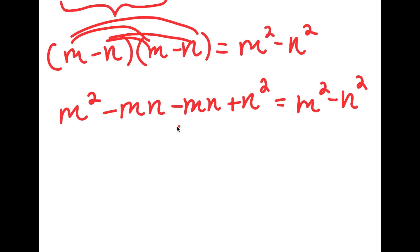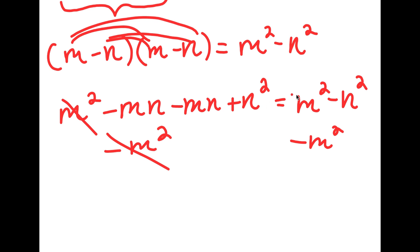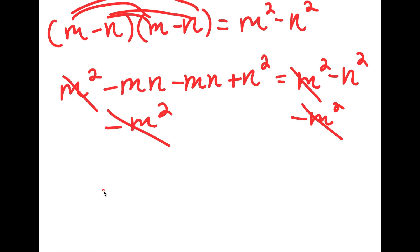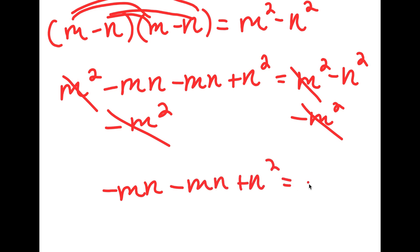Now I can do a few things here. I can first start by subtracting m squared on both sides, so these two m squareds cancel out. And now I'll be left with negative mn minus mn plus n squared is equal to negative n squared.